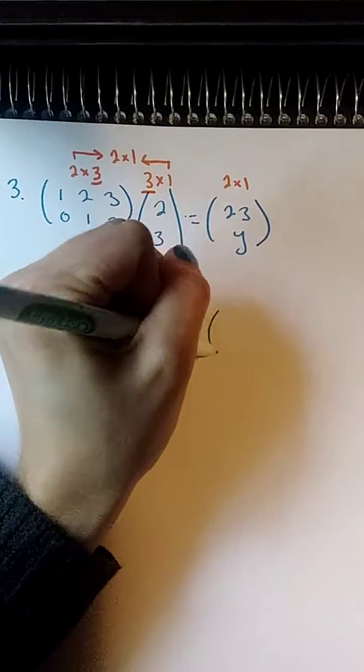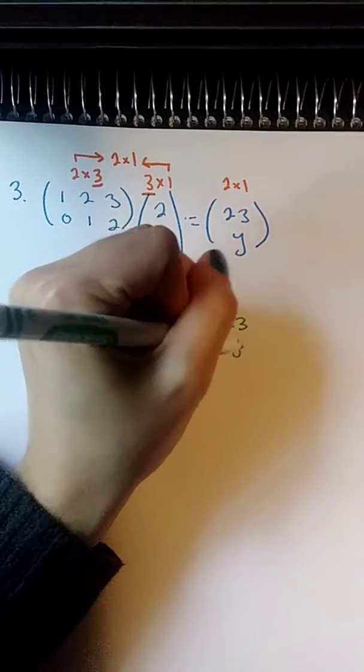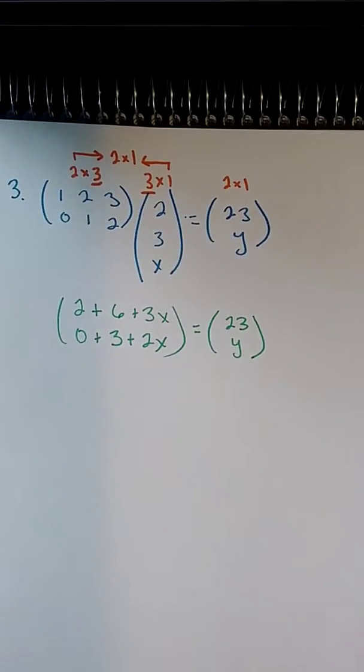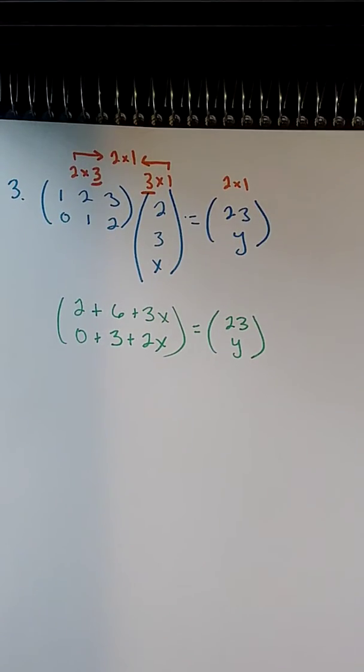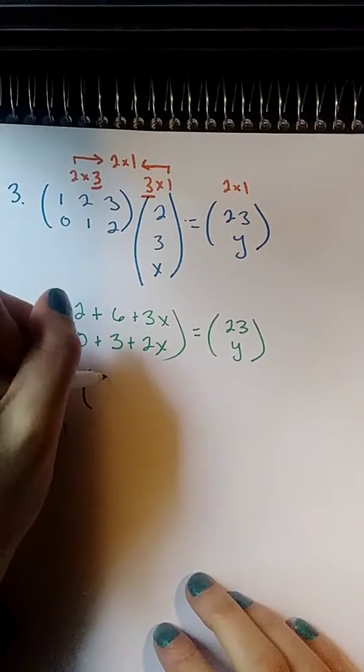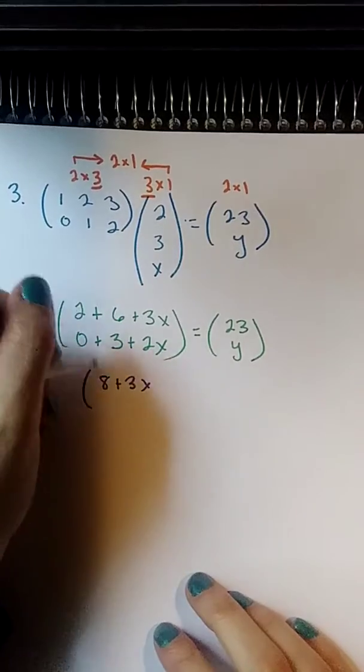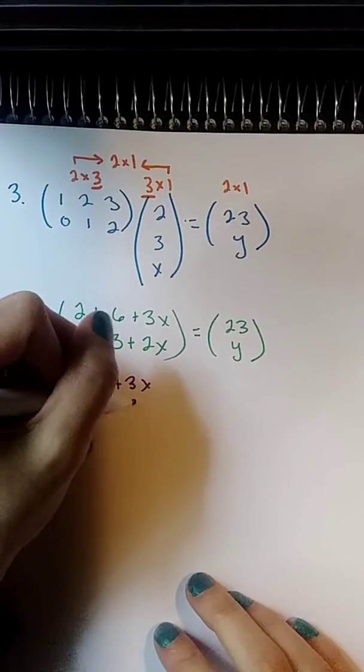Now, this is equal to (23, y). So what I can do is simplify each element inside the matrix on the left and then compare elements with the one on the right. So on the left, I have 8 plus 3x and I have 3 plus 2x.